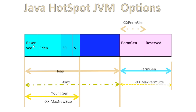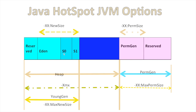In the young gen, we further divide into four blocks: Eden, reserved, Survivor Space 0, and Survivor Space 1. So the entire heap is configured with -Xmx, then we define the size of young gen with -XX:MaxNewSize. The young gen contains Eden space with reserved and Survivor Space 0 and 1.